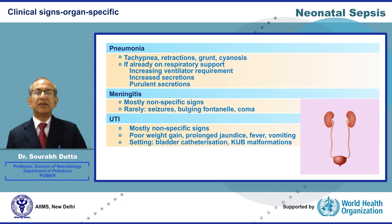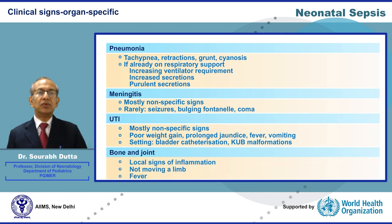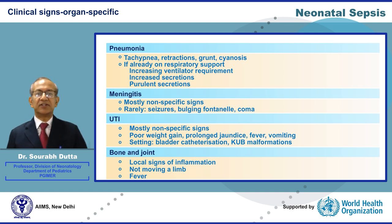Unexplained poor weight gain, prolonged jaundice, fever and vomiting are subtle clues for UTI. UTI often occurs in the setting of bladder catheterization or urinary tract malformations. Bone and joint infections must be carefully looked for as they may be easily missed. The presence of local signs of inflammation and inability to move a limb because of pain combined with fever suggests a bone or joint infection.